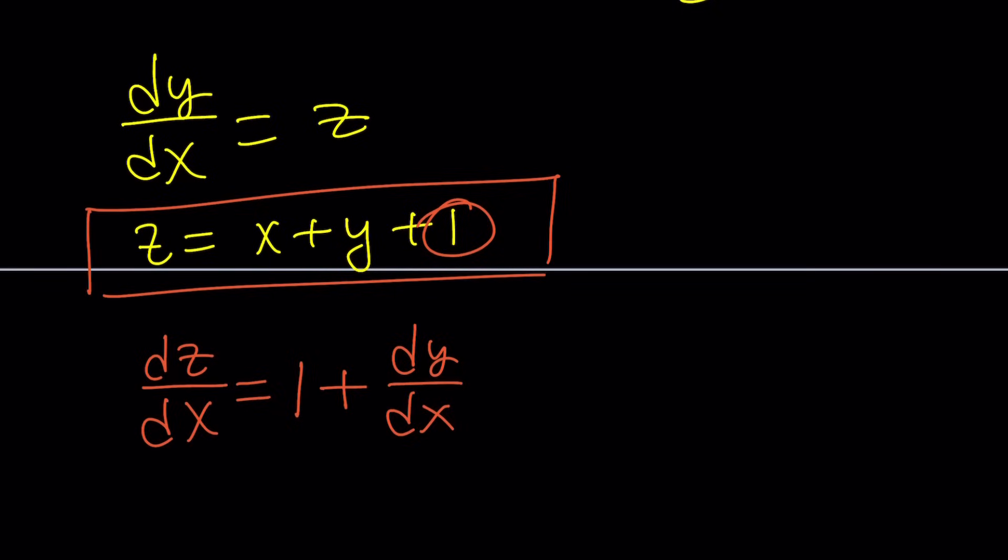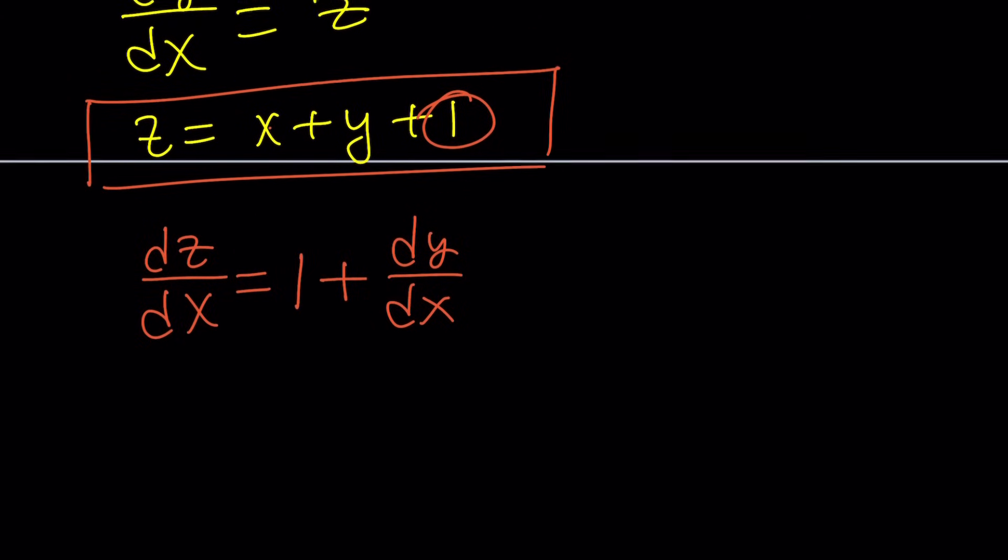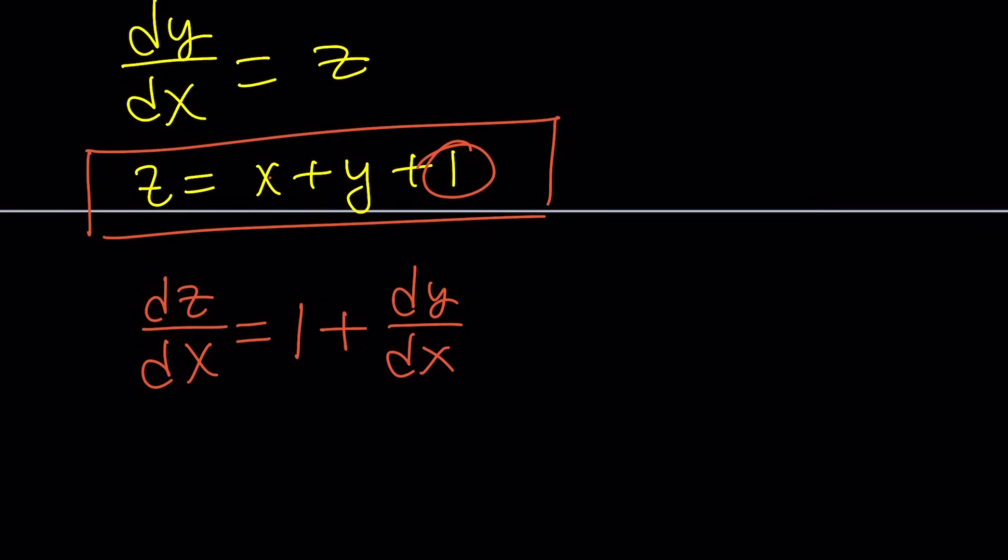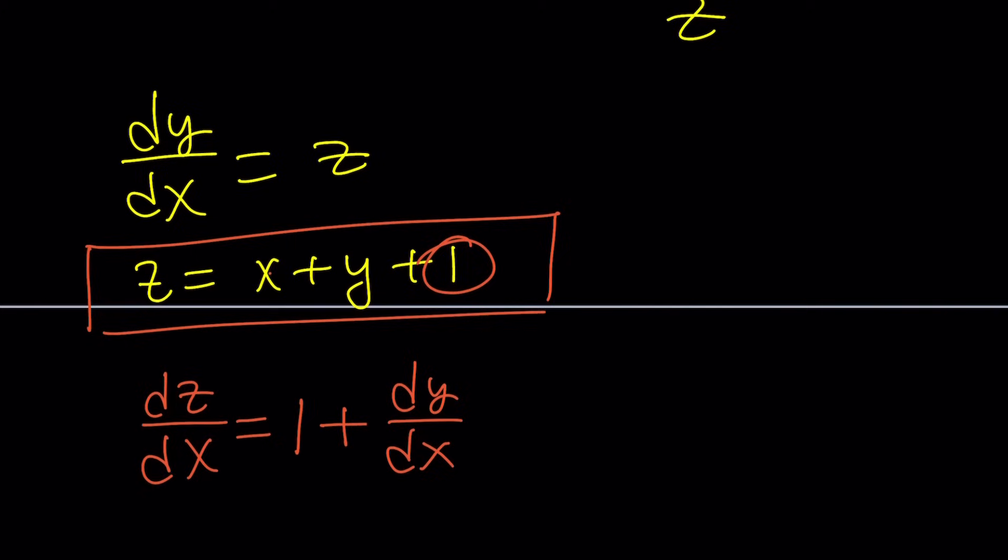So don't get confused. The derivative of x is 1. The derivative of 1 is 0. So now, how can I use this equation in my equations? We do know that dz/dx is equal to 1 plus dy/dx. So from here, we can do something like this. We can go ahead and replace dy/dx with z because that's what it is.